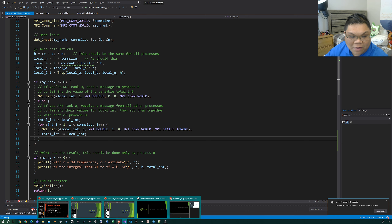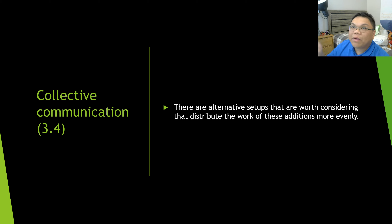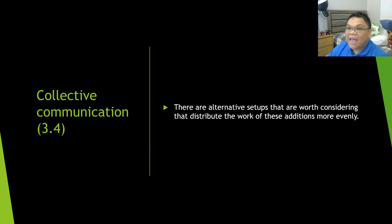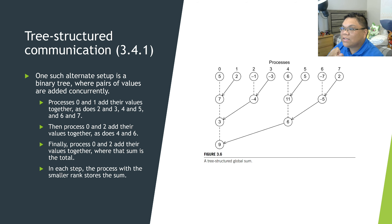The next section talks about ways where we can make this addition more efficient. The examples here are on the smaller scale, but the point of MPI code is that it's scalable — we can run it with as many processes as we want on as powerful hardware as we can find. What if the processes coordinated with each other and pre-added some of these values?